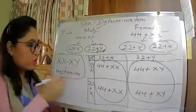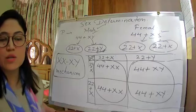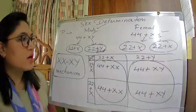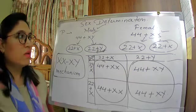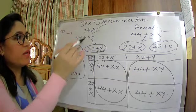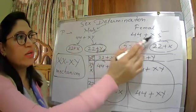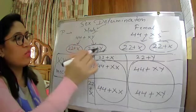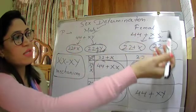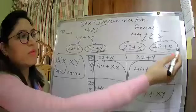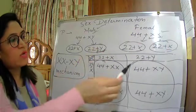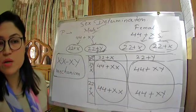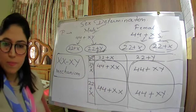This mechanism of sex determination in humans is called the XX-XY mechanism. To quickly recap: male is 44 + XY, female is 44 + XX. In gamete formation, the male can send 22 + X or 22 + Y, while the female can only send X. By the Punnett square, there are 50% chances of a male child and 50% chances of a female child.